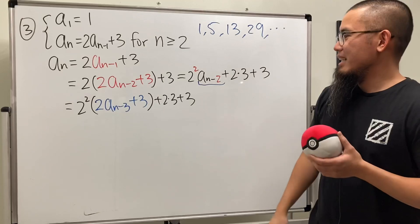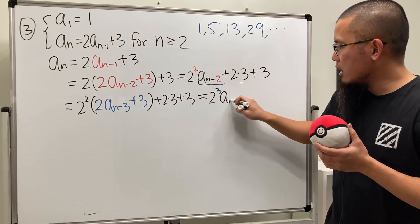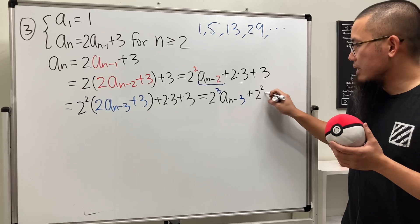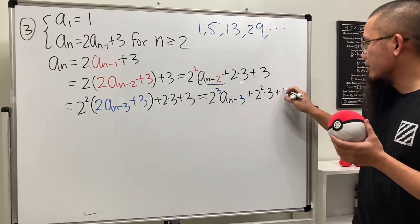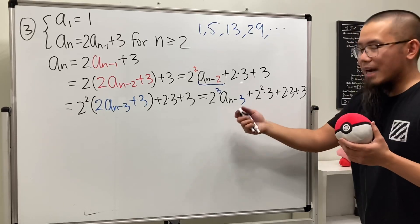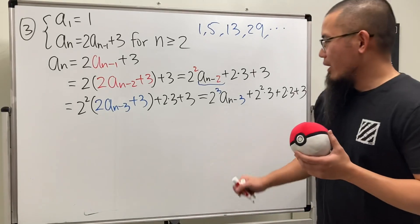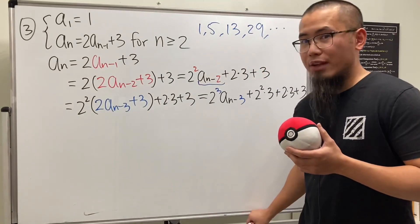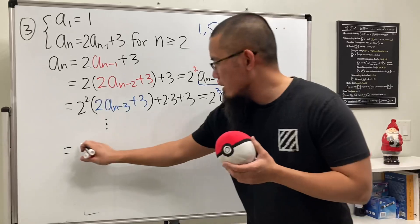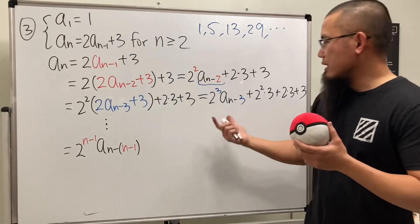Cleaning things up, we get 2³·aₙ₋₃ + 2²·3 + 2·3 + 3. You can see this gets longer and longer each step, with the power of two increasing. Again, we use the initial condition by plugging in n minus one as we did earlier, giving 2^(n-1)·aₙ₋₍ₙ₋₁₎.